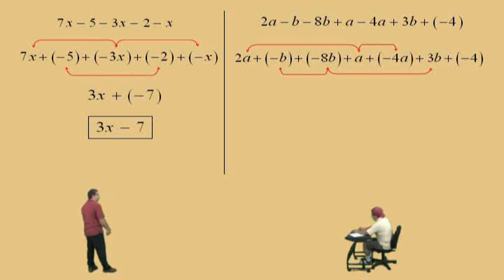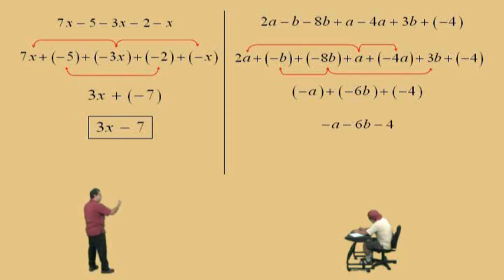Okay, Charlie. So, 2a plus a is what, Charlie? 3a. Subtract 4a, negative a. Negative a. Let me let you know that you don't have to put the parentheses around the negative a. I'm just doing it for presentation. So, we have a negative a. Now, let's combine our b's. What's negative b plus a negative 8b, Charlie? Negative 9b. Plus a 3b? Negative 6b. Negative 6b. Very nice. And, bring down your negative 4. And, all we have to do is bring down our work, take off the parentheses. Negative a, subtract 6b, subtract 4. And, there it is.